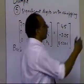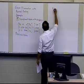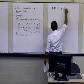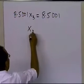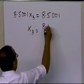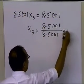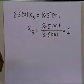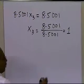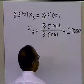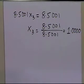The last equation is 8.5001 x3 equals 8.5001, so I get x3 equals 8.5001 divided by 8.5001, and that turns out to be 1. I can show all the significant digits which I was supposed to show, but I'm just not showing them for purposes of keeping things a little bit clean.